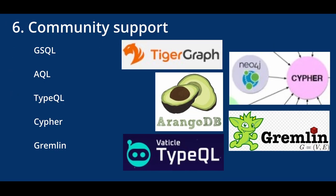Going hand in hand with open resources is communities of support. Many graph databases and query languages have their own communities — people rallying around each other to help those starting out or struggling with something complex. For example, Cypher has people called ninjas who are well-versed in the query language and its resources. If you're starting something new, having a community to turn to when you get stuck is really important.